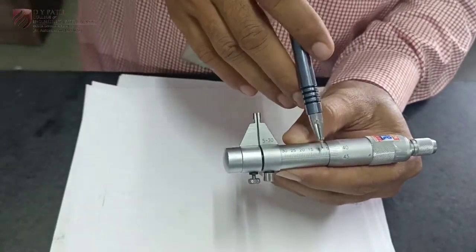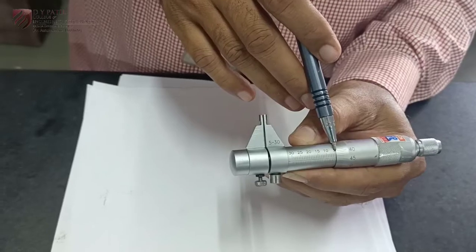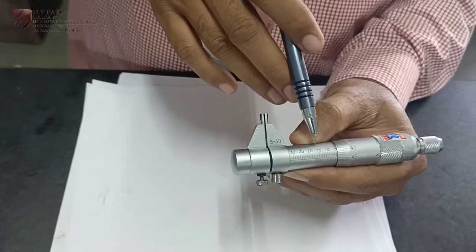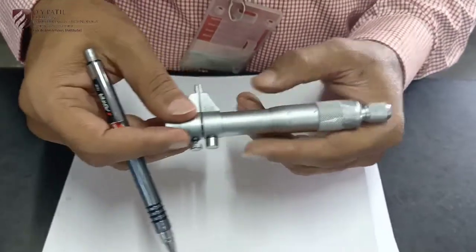Actually it should start from this side. So 5 which is my first reading, 10, 15, 20, 25 and 30.